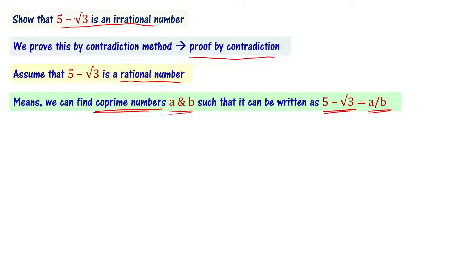Co-prime integers means they have only 1 as their common factor. When a by b is written in its simplest form, the numerator and denominator have only 1 as a common factor — that is what co-prime numbers means. So we have 5 minus root 3 equal to a by b. Now, transposing root 3 to the other side, we get root 3 equal to 5 minus a by b.